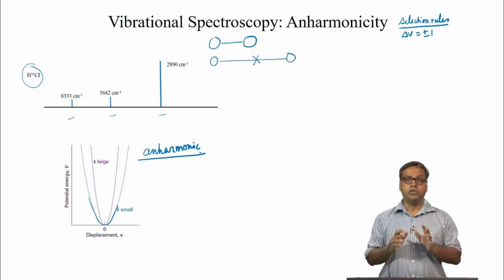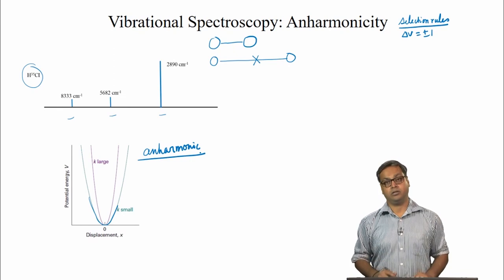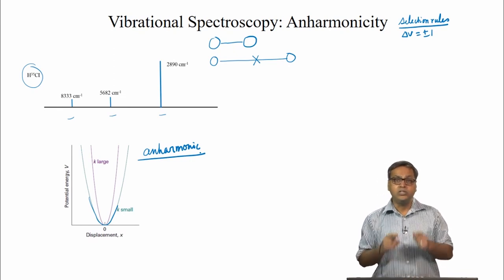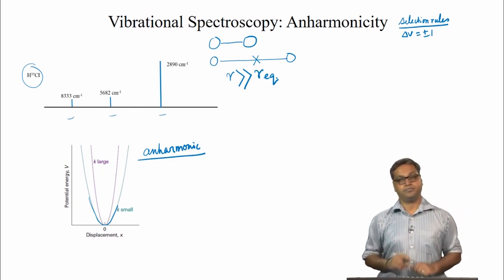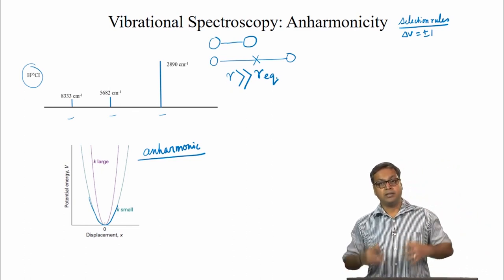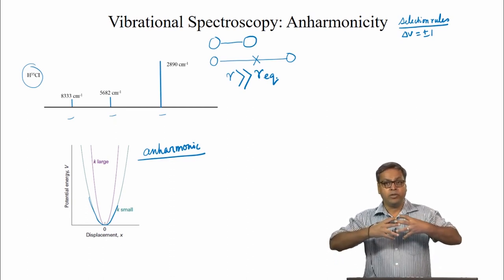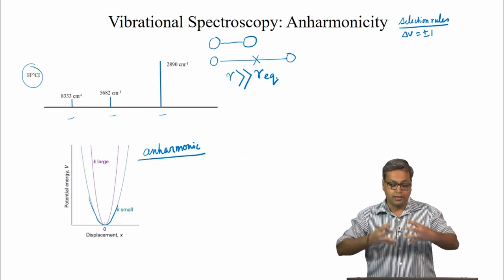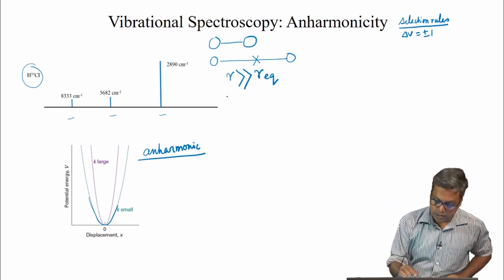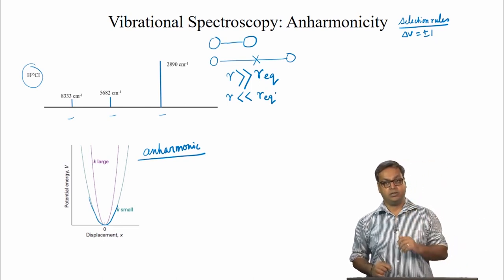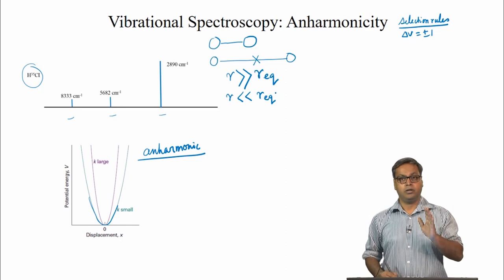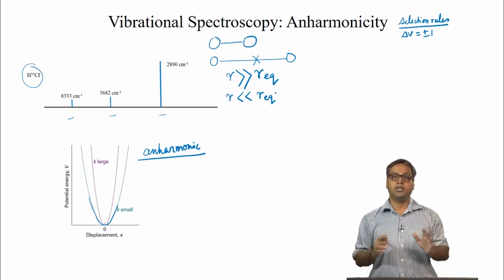Thus, we need to introduce a more realistic potential function to reflect that the bond dissociates if R is much greater than R equilibrium. Moreover, the nuclei repel each other when the bond gets much smaller than the equilibrium bond length, that is when R is less than R equilibrium. So the potential is much steeper than what is predicted from the harmonic oscillator model.